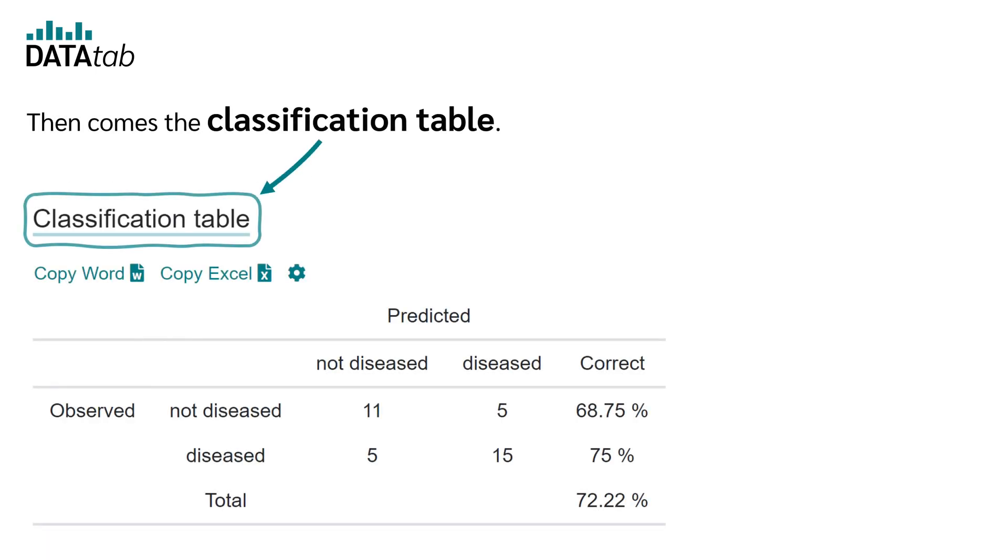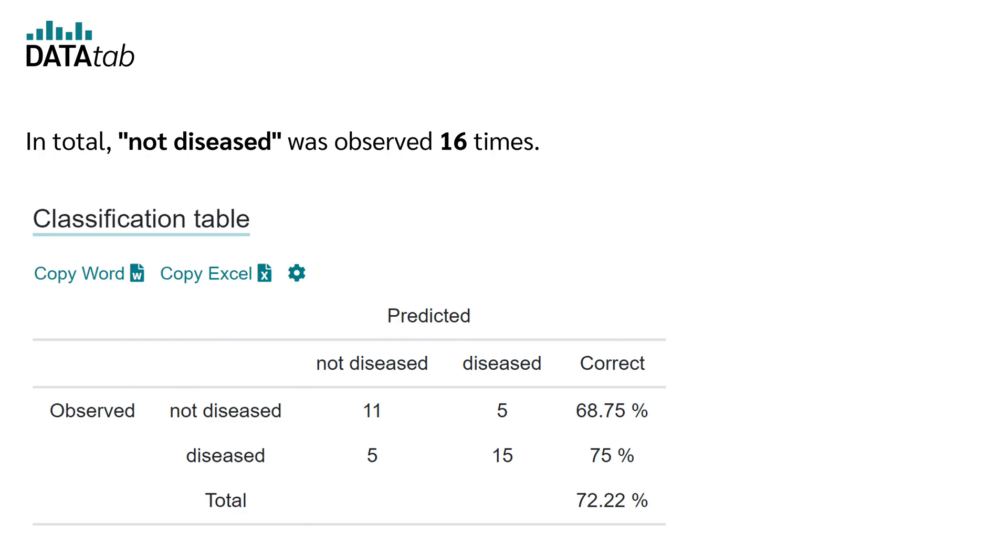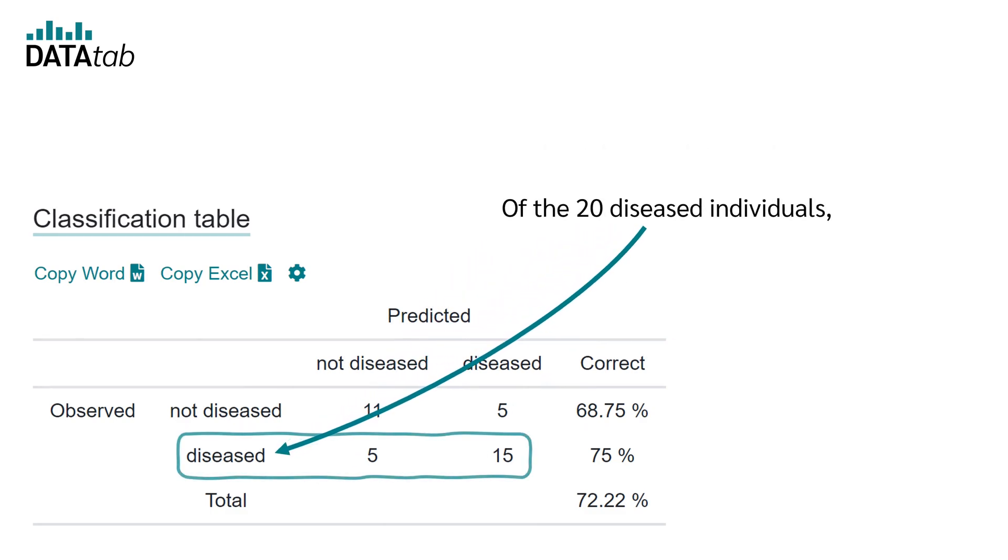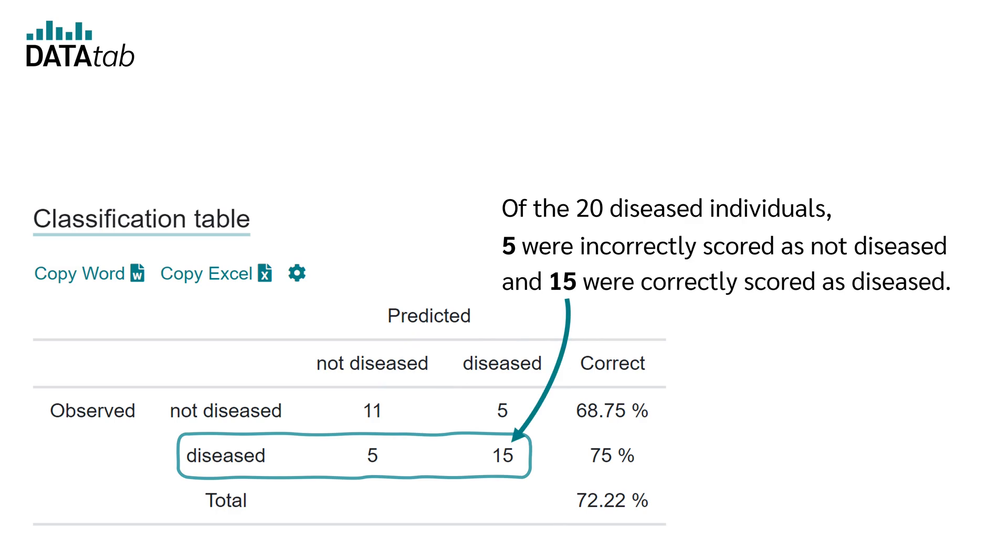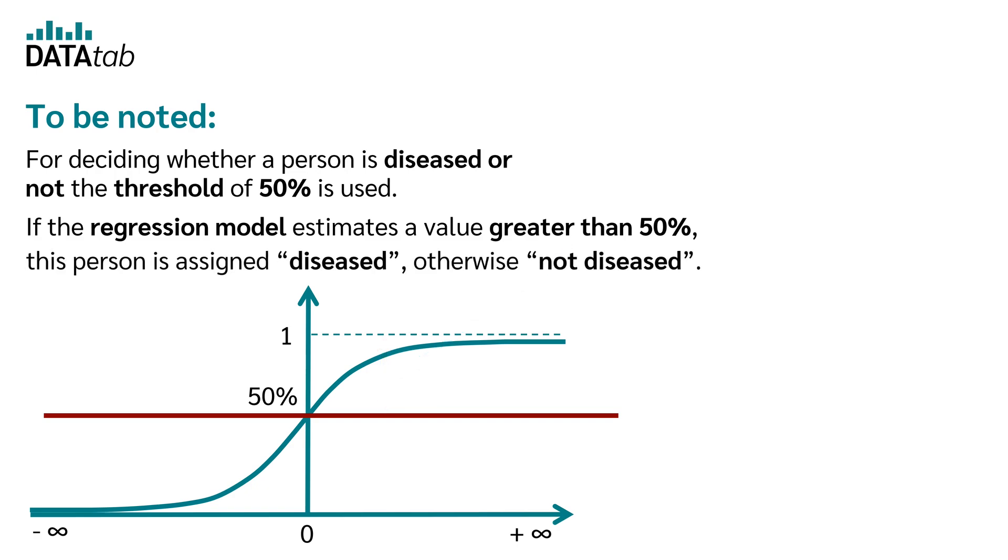Then comes the classification table. Here you can see how often the categories not-deceased and deceased were observed and how often they were predicted. In total, not-deceased was observed 16 times. Of these 16 individuals, the regression model correctly scored 11 as not-deceased and incorrectly scored 5 as deceased. Of the 20 deceased individuals, 5 were incorrectly scored as not-deceased and 15 were correctly scored as deceased. To be noted, for deciding whether a person is deceased or not, the threshold of 50% is used. If the regression model estimates a value greater than 50%, this person is assigned deceased, otherwise not deceased.